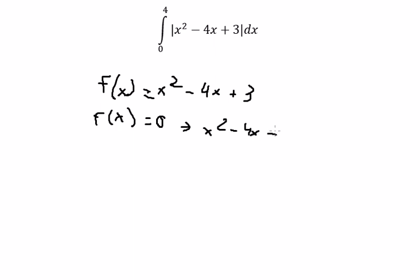x² - 4x + 3 equal to 0, so we have two solutions: x equal to 1 and x equal to 3.